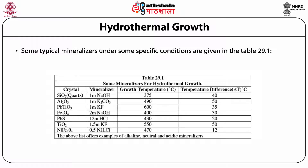For the growth of PbS (lead sulfide), the mineralizer is 12M HCl and the growth temperature is 430°C. For TiO₂, the mineralizer used is 1.5M KF, growth temperature is 550°C, and delta T is 50°C. For NiFe₂O₄, the mineralizer used is 0.5M NH₄Cl, growth temperature is 470°C, and delta T is 12°C. The above list offers examples of alkaline, neutral, and acidic mineralizers.